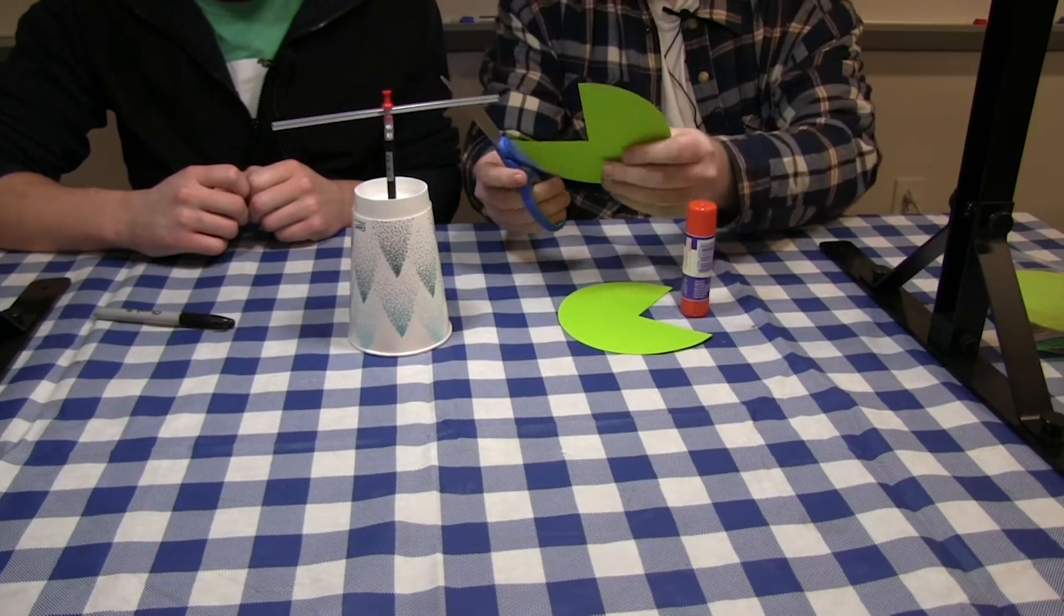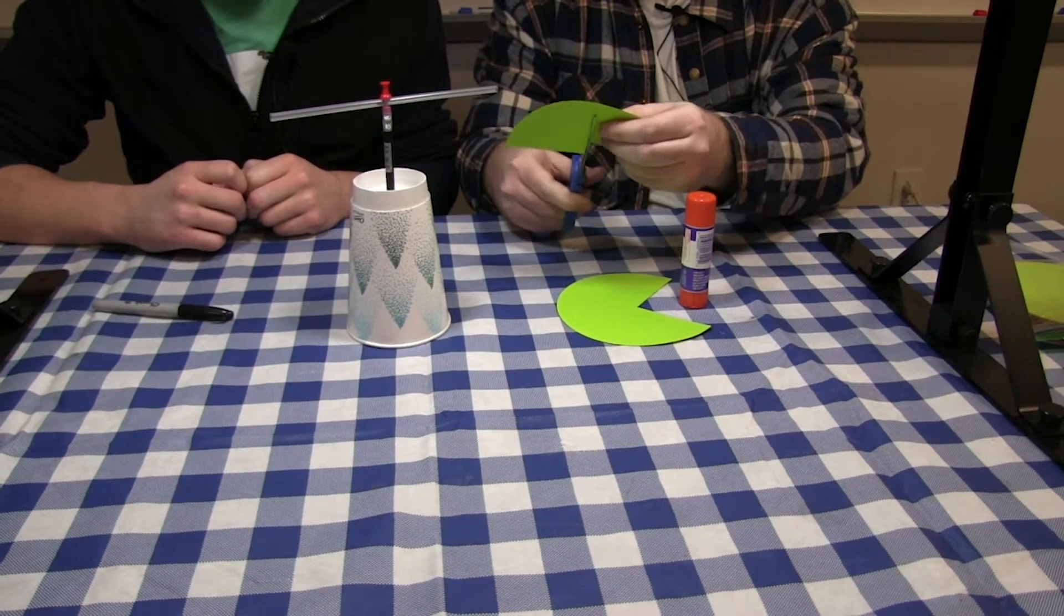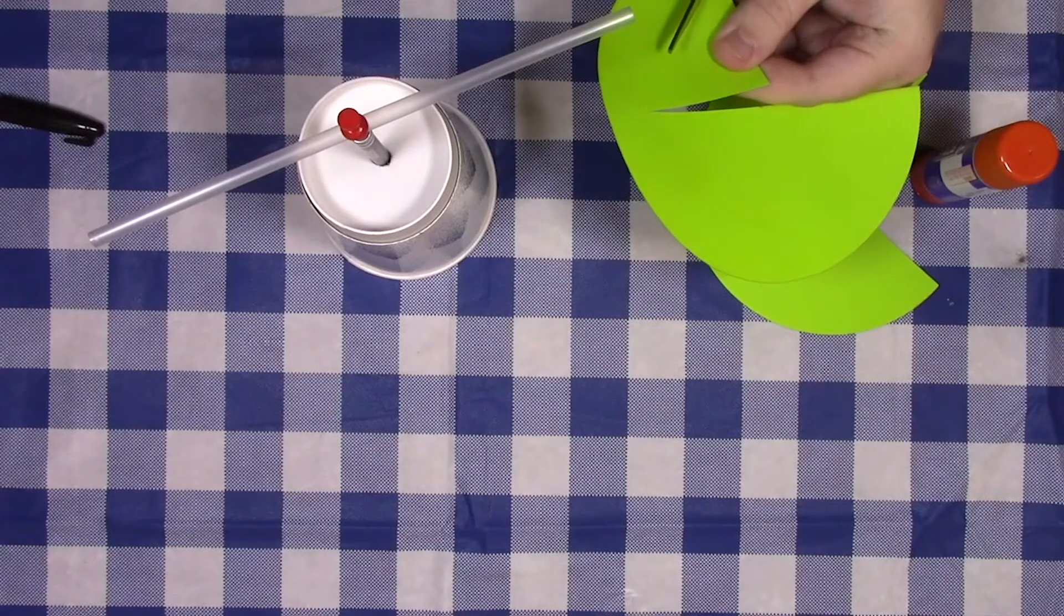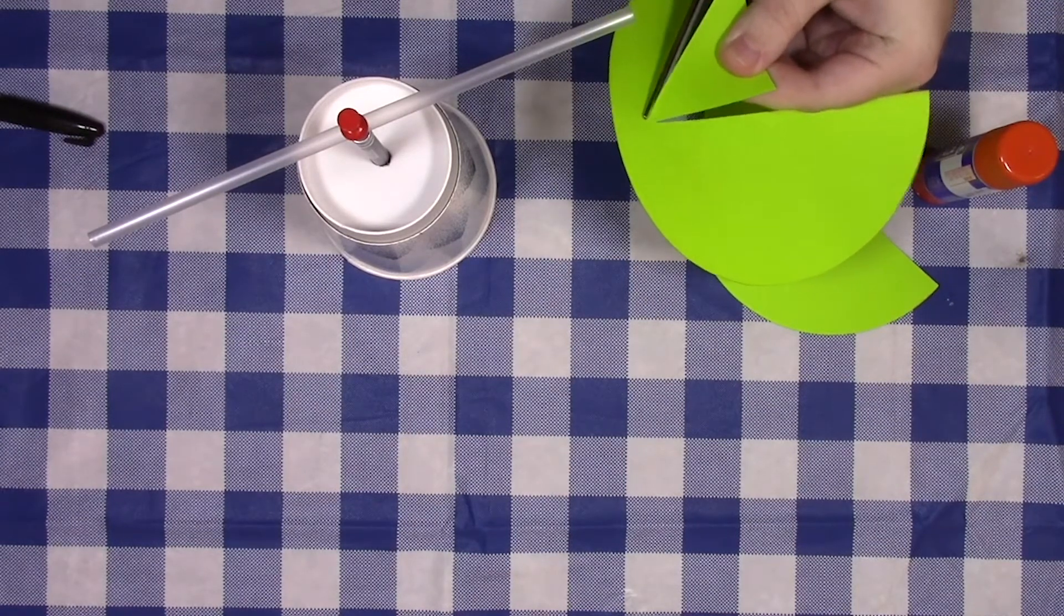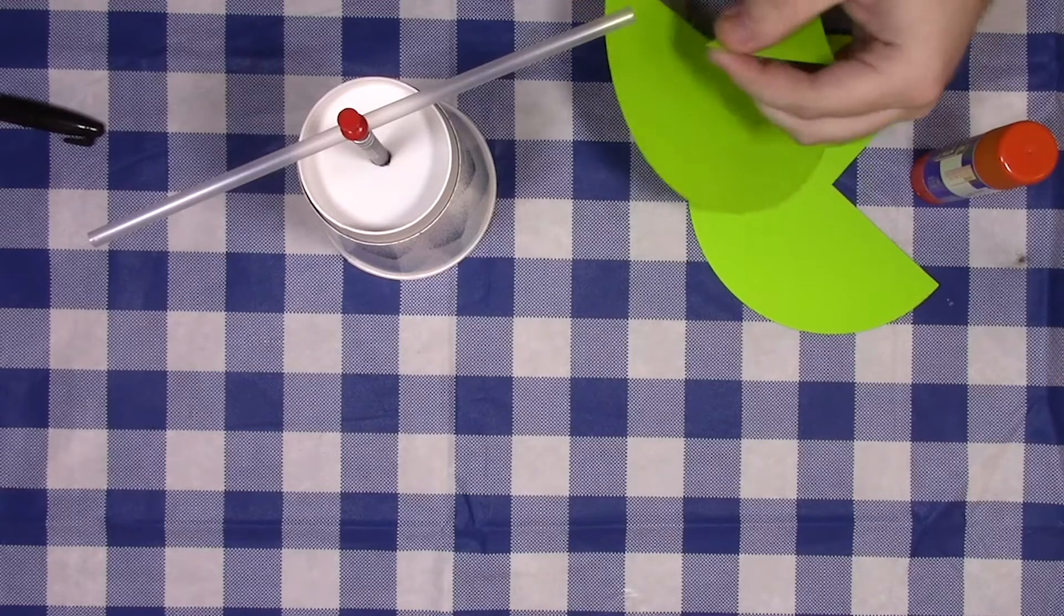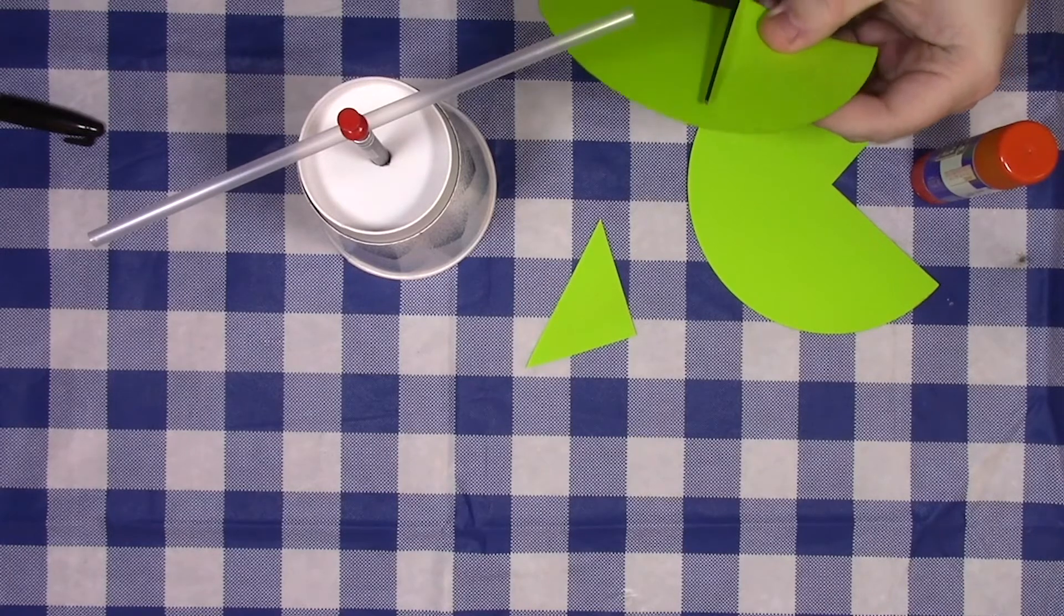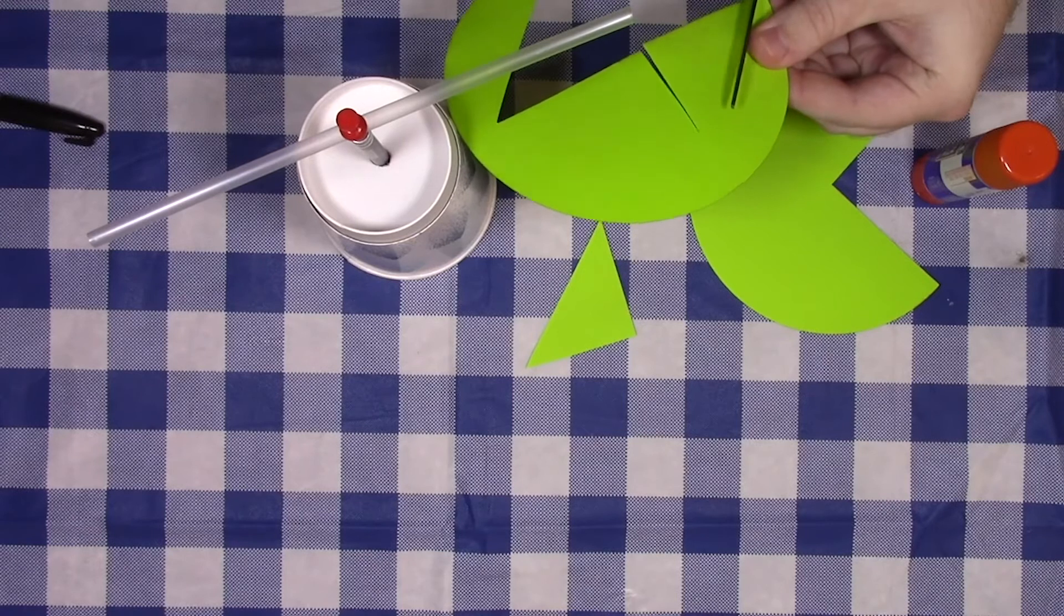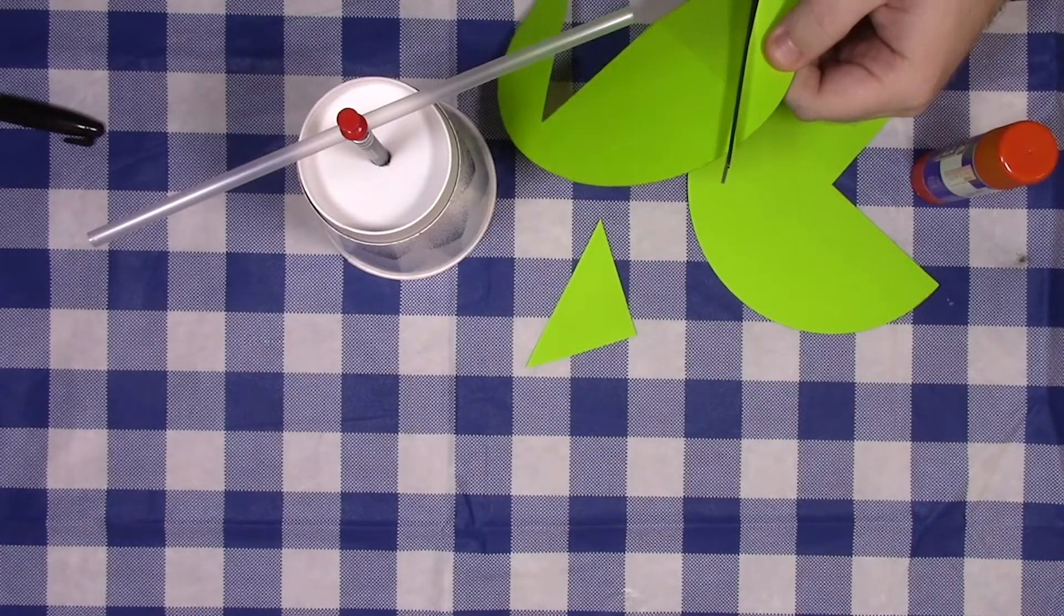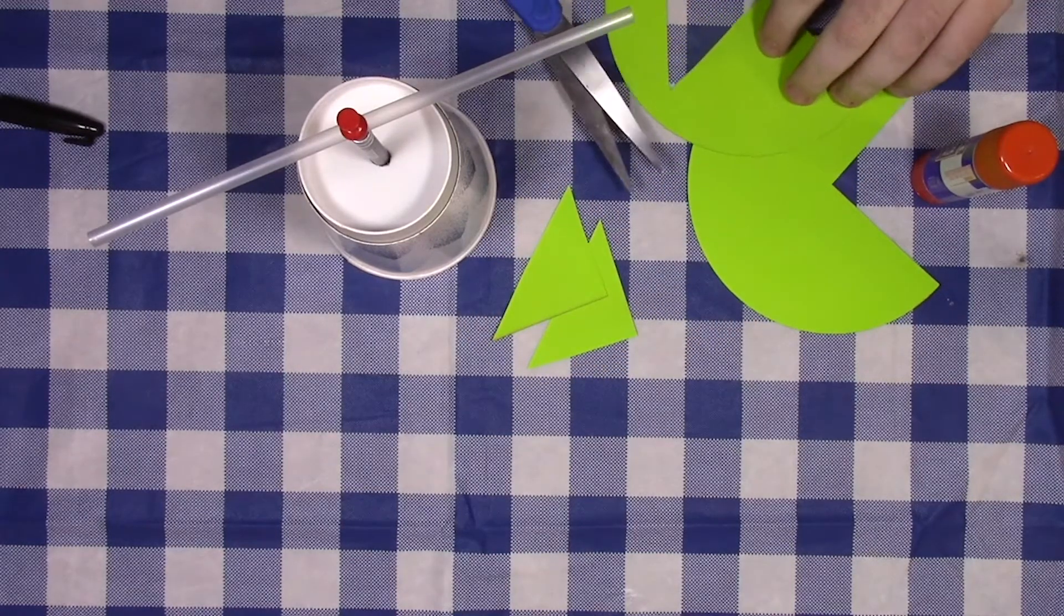We'll start out by cutting out two triangles. They only have to be a similar size. Cut your first triangle out, then move on to cut out your second triangle. Now you have your two triangles to make the wind vane.